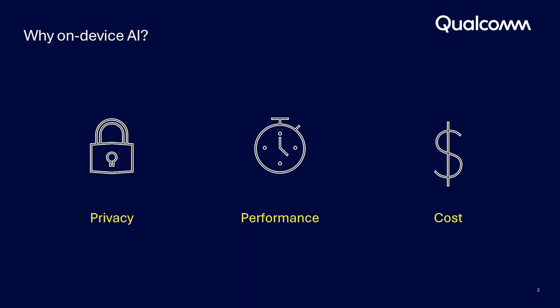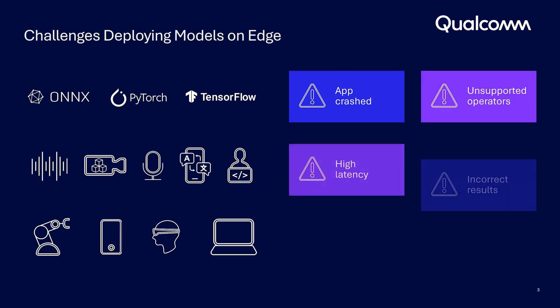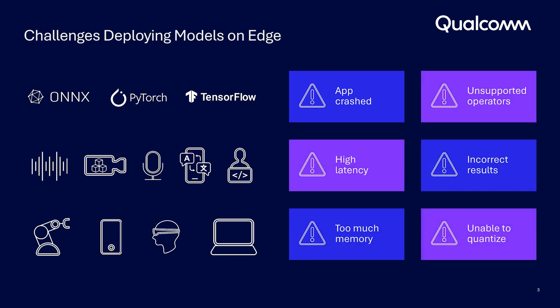Now that we understand the benefits of on-device AI, let's explore how Qualcomm AI Hub provides such superior performance. Through years of working with developers, we know that there are challenges deploying models on-device, whether it's the app crashing, the model taking too long, too much memory, or even inaccuracies with the model. With this in mind, we designed Qualcomm AI Hub. We focus on providing a downloadable target asset ready to be deployed on your device.